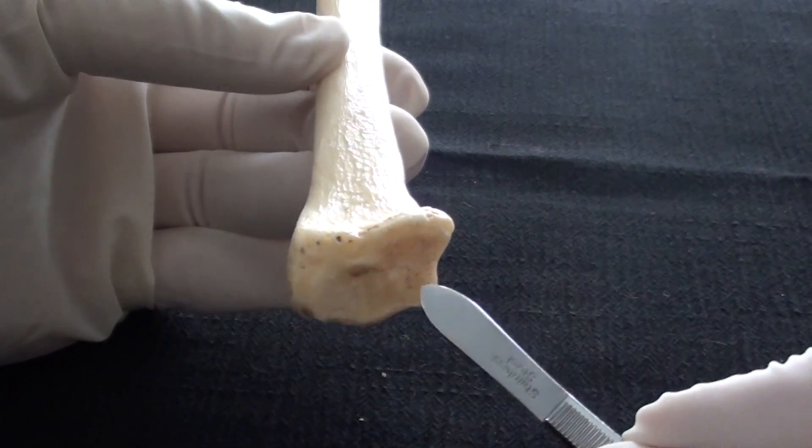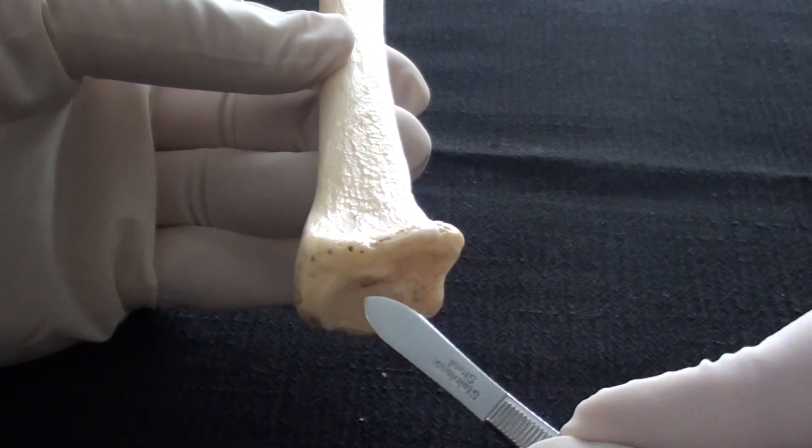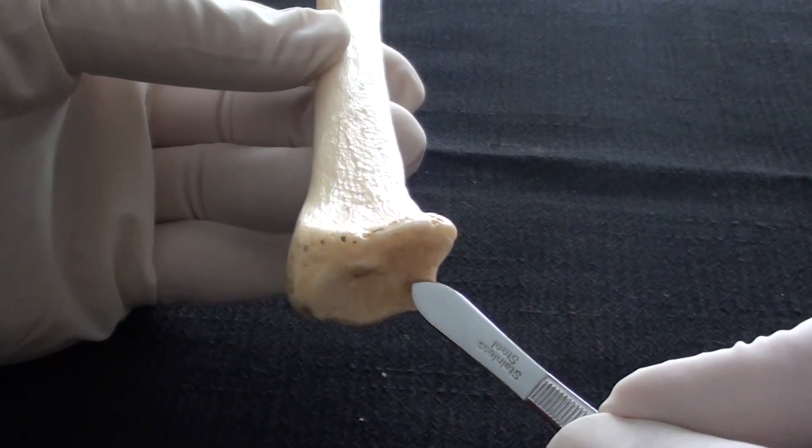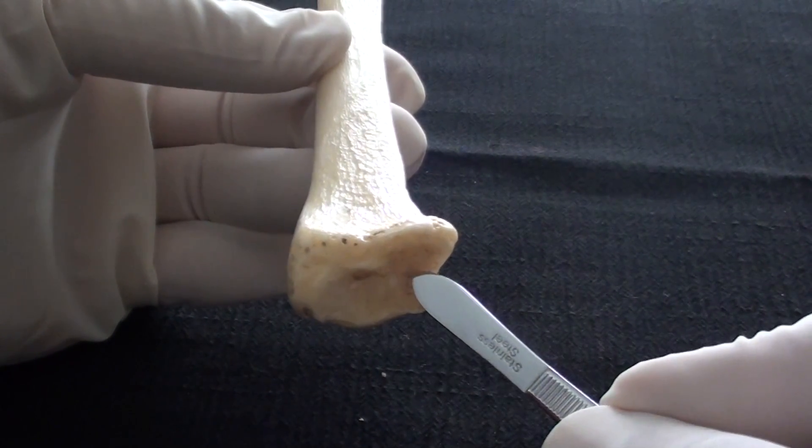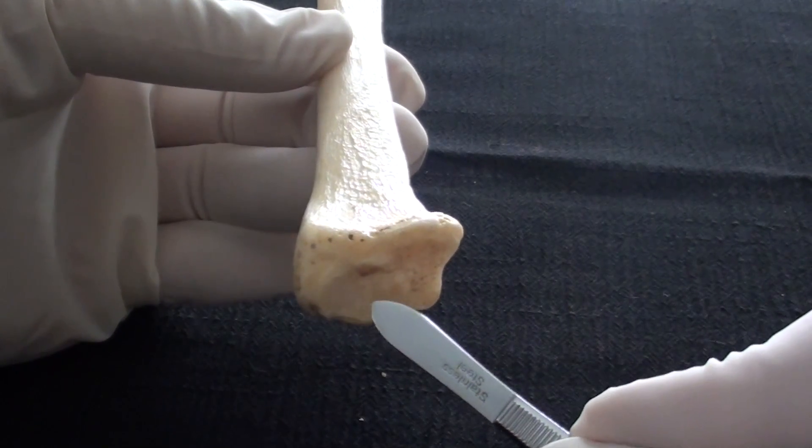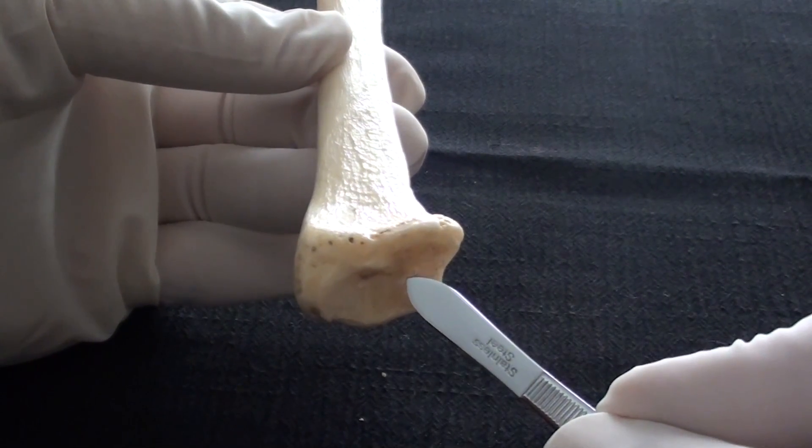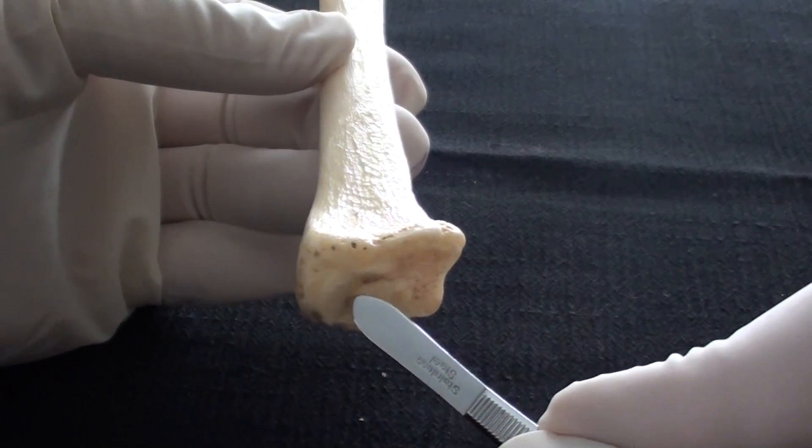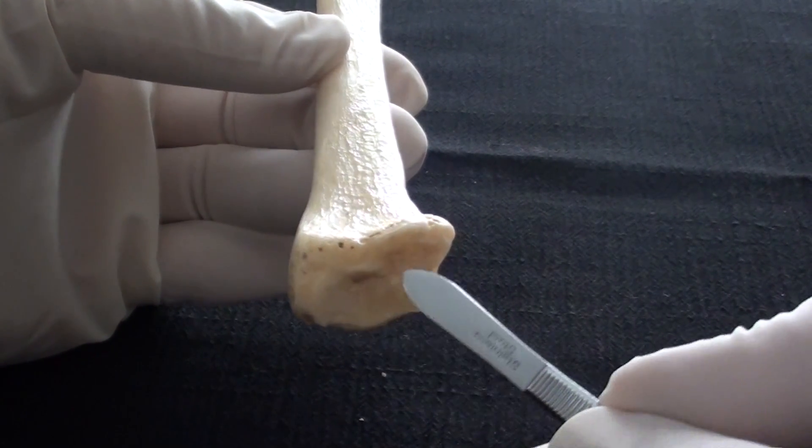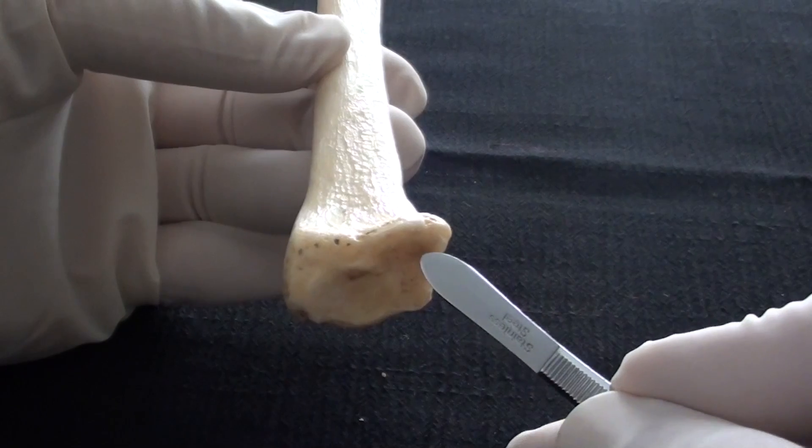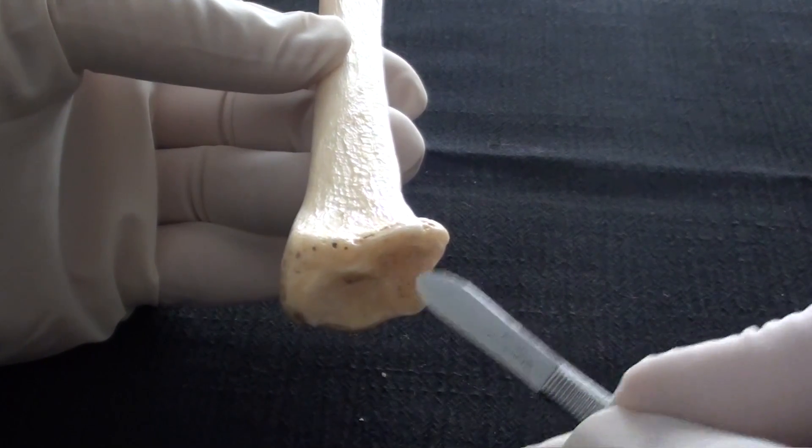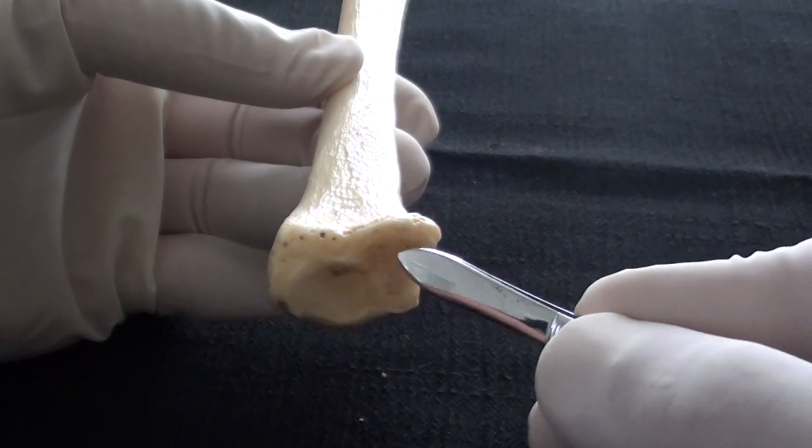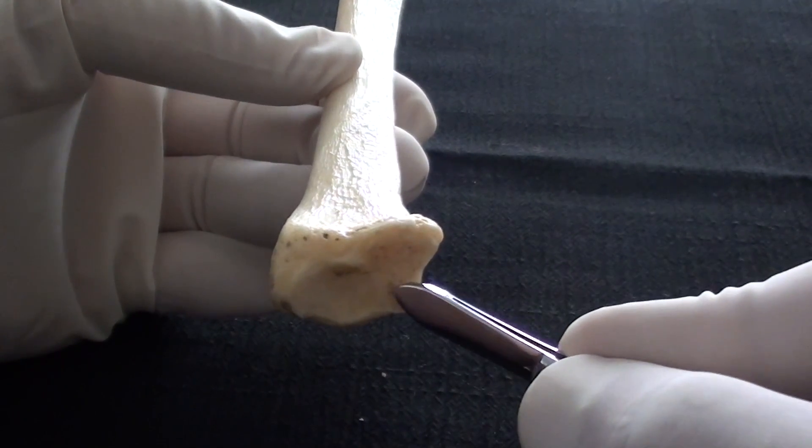One that we can see now a little bit better is on the very distal end of the bone, and here we can identify two different articular surfaces for two bones of the proximal row of carpal bones. One which is more laterally, that is articular surface for the scaphoid, and the bone which comes next to the scaphoid in the proximal row of carpal bones is a lunate bone and the distal radius will have articular surface for it.